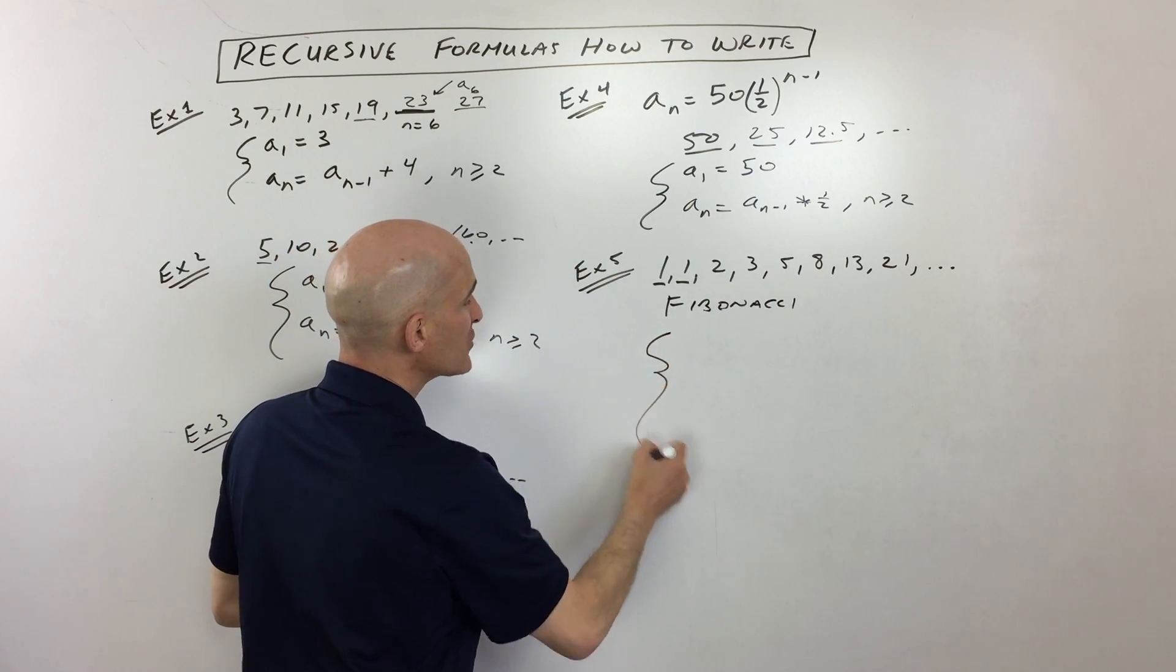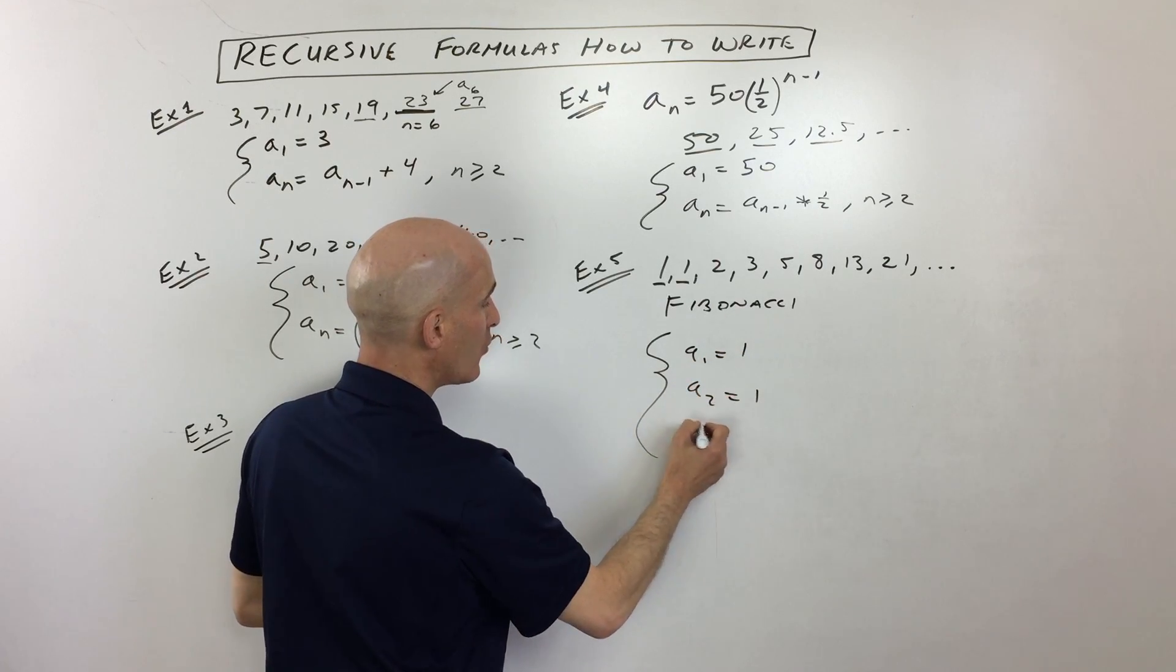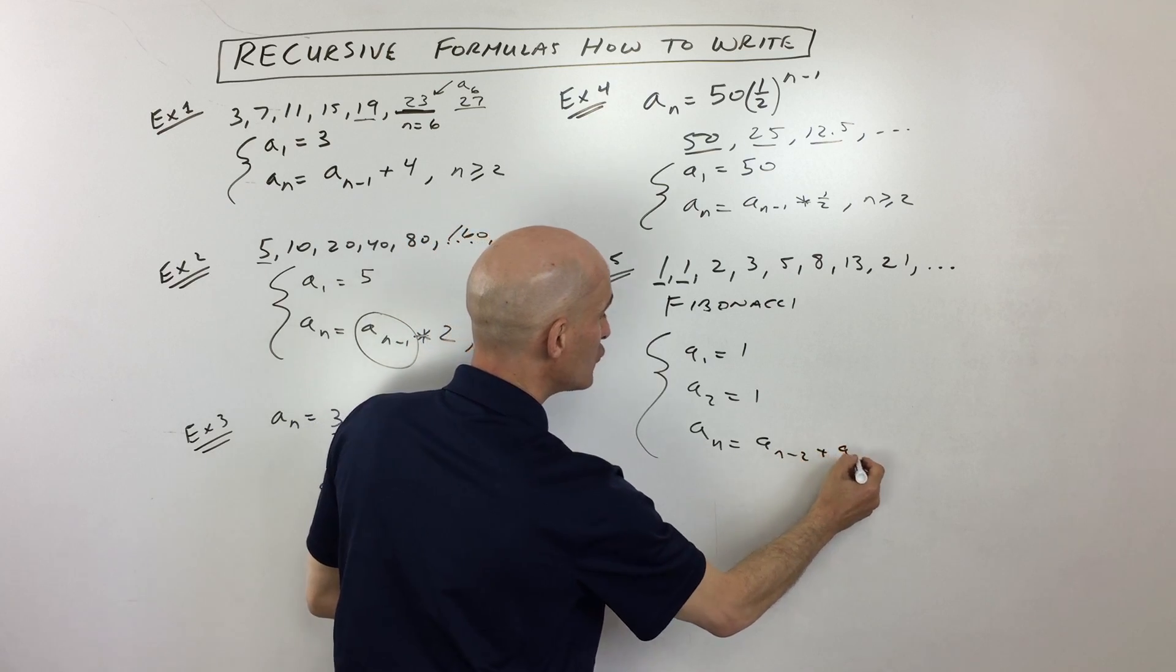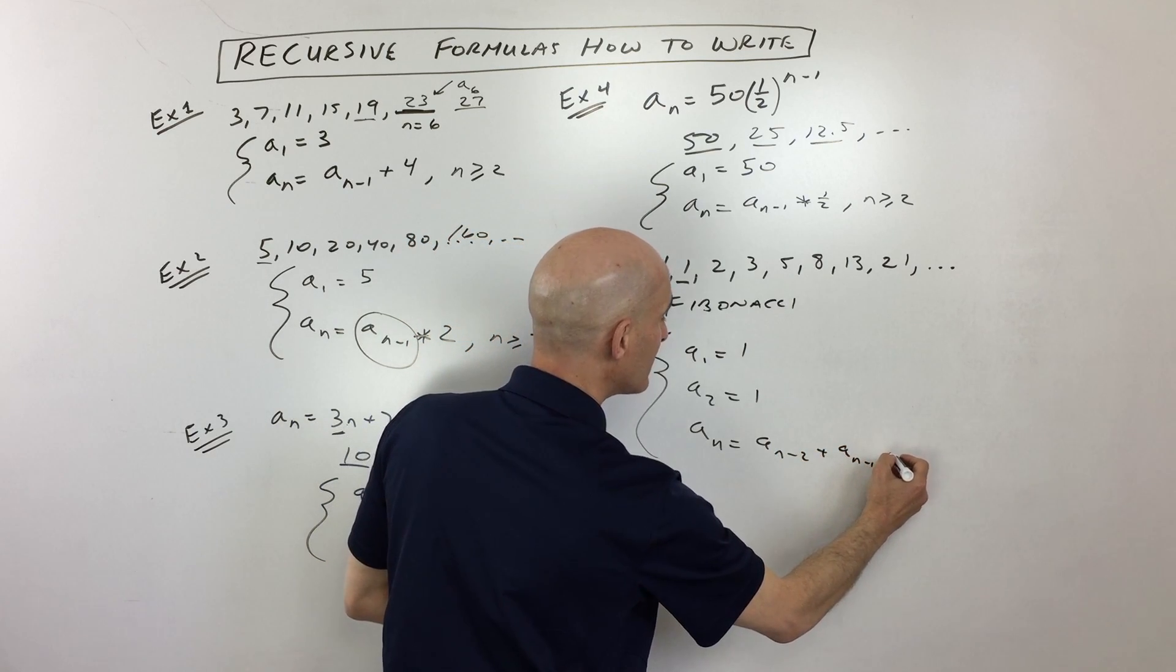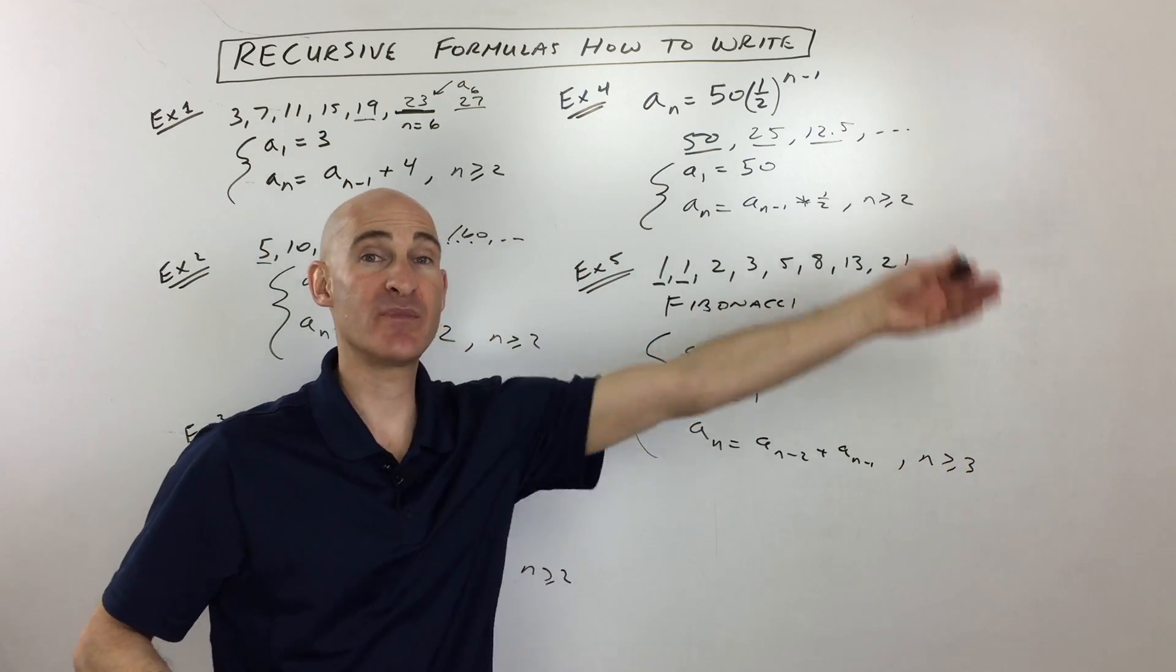So what I'm going to do for this one is I'm going to say that a sub 1 is equal to 1, a sub 2 is equal to 1, a sub n is equal to a sub n minus 2 plus a sub n minus 1. And this is for when n is greater than or equal to 3, meaning the third term and beyond.